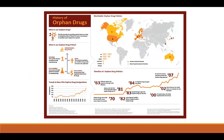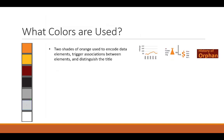My infographic uses red and orange and black as primary elements over a white background with gray accents. Two shades of orange are being used to encode information throughout the graphic, including the trend lines and symbols used throughout the graphic in various locations.